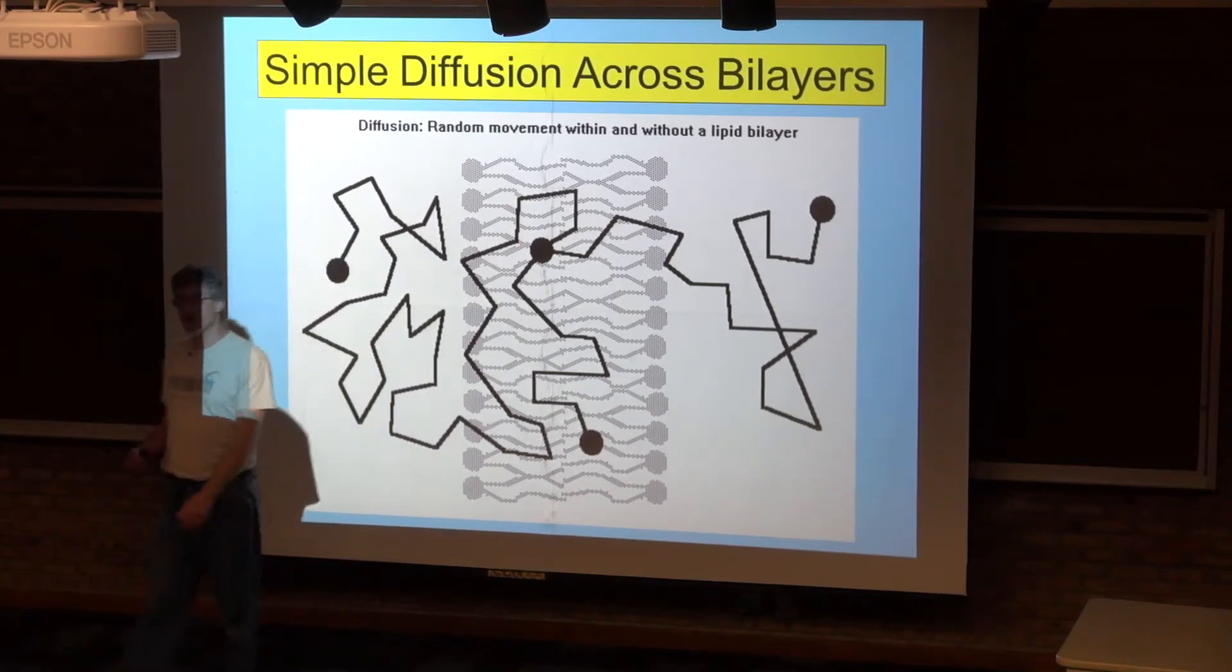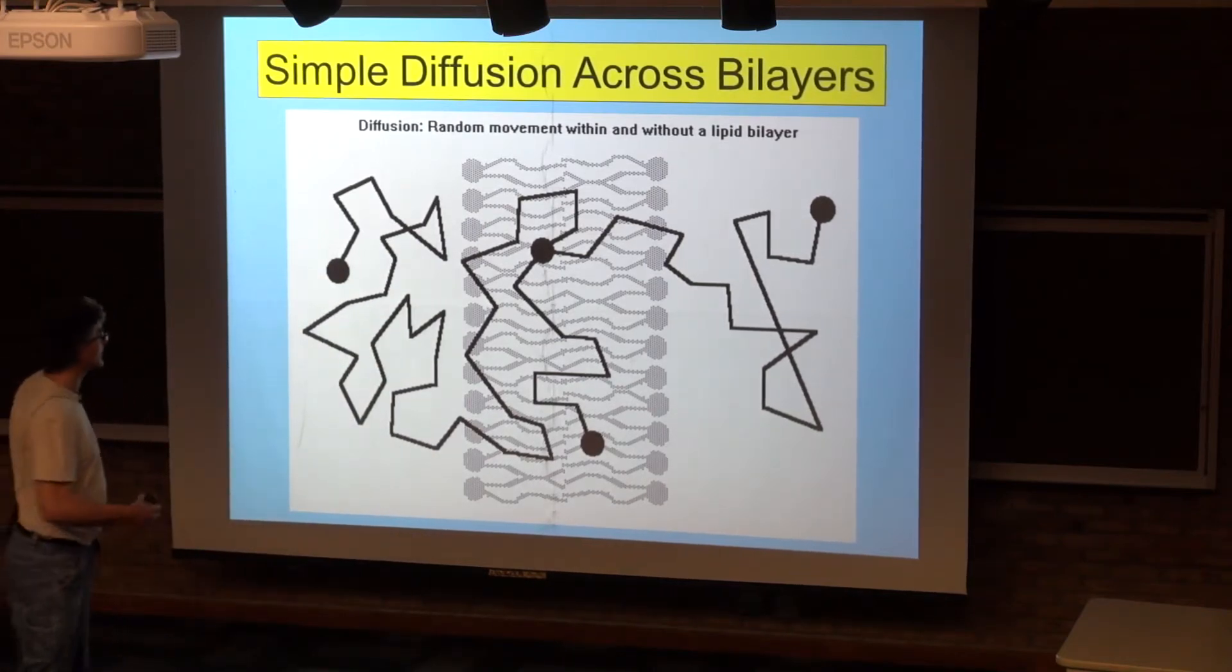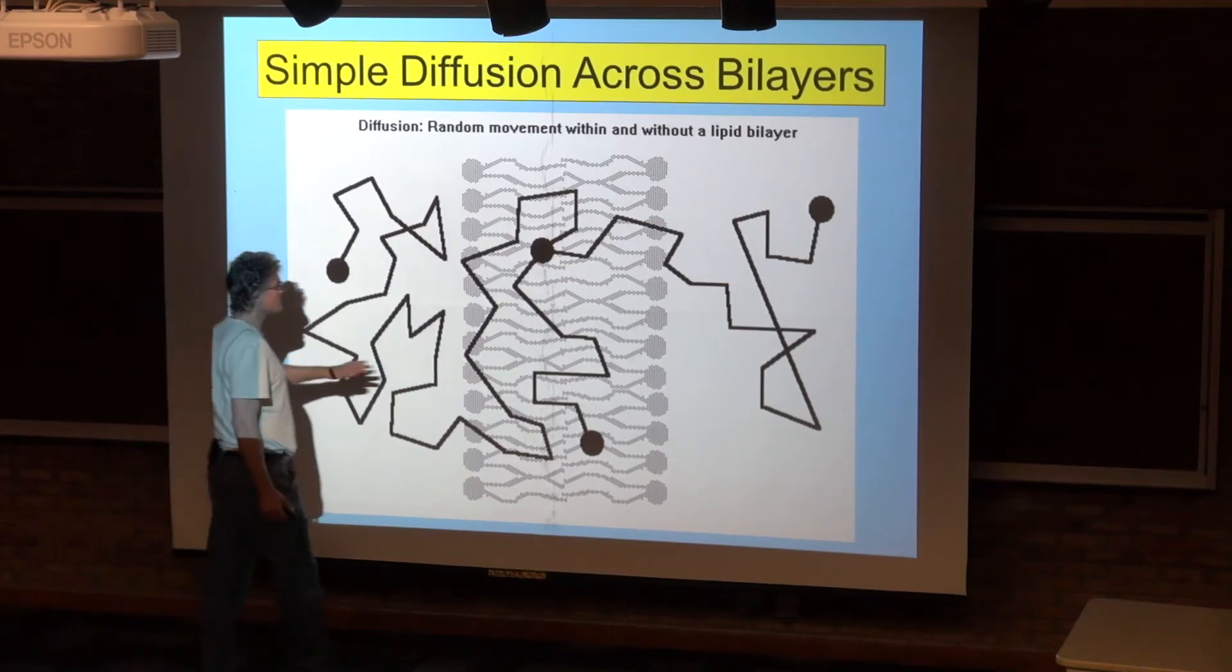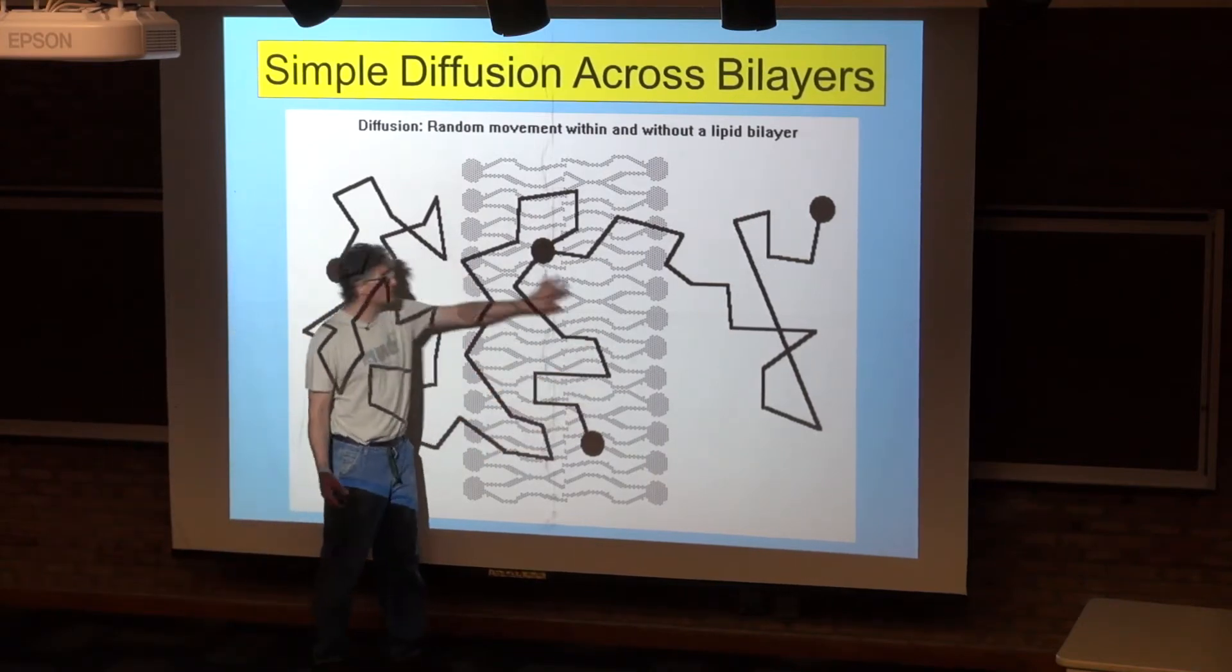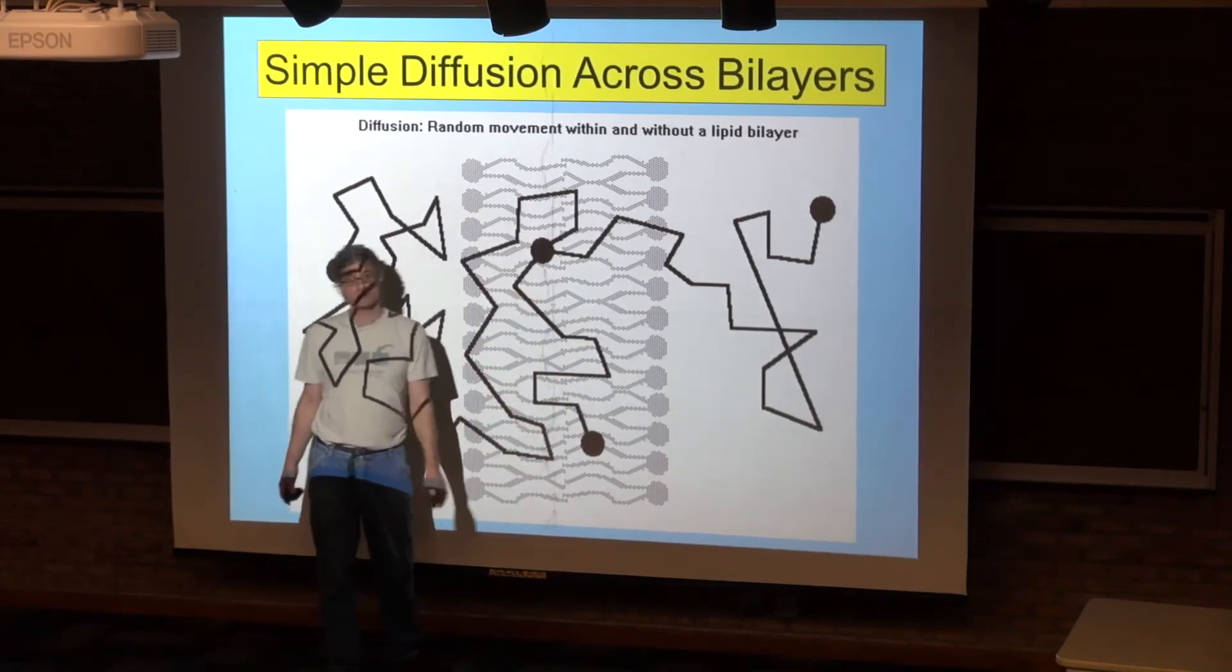If it's something that's small and hydrophobic, it's going to want to be in the lipid bilayer. And so as these things collide in the lipid bilayer, the concentration inside the lipid bilayer is going to be increasing.